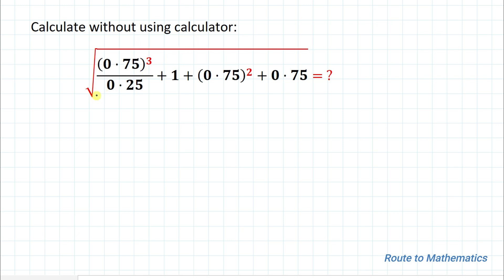So here we have root under 0.75 whole cube divided by 0.25 plus 1 plus 0.75 whole square plus 0.75.